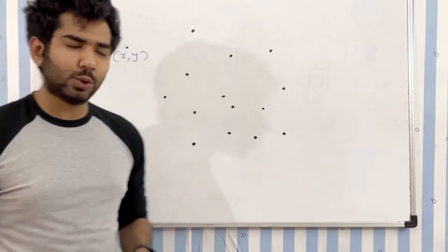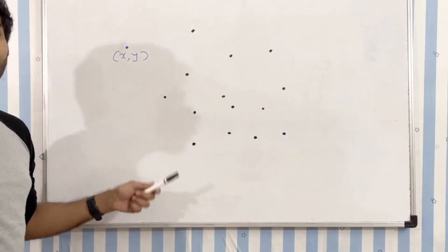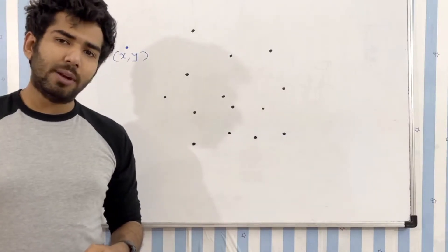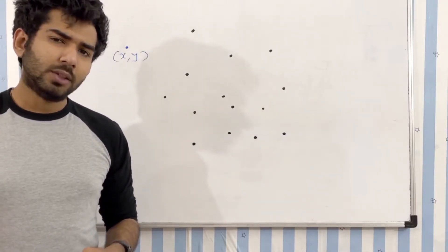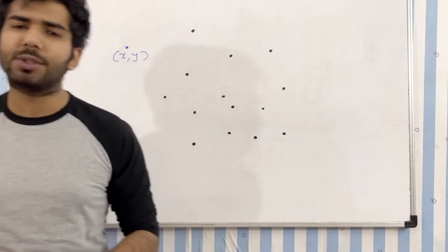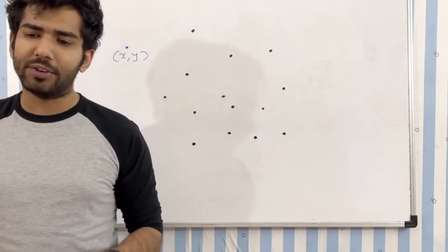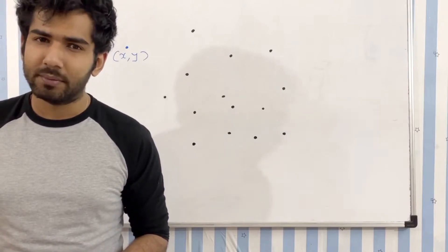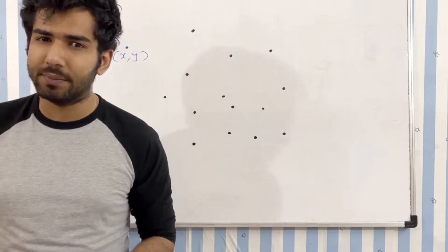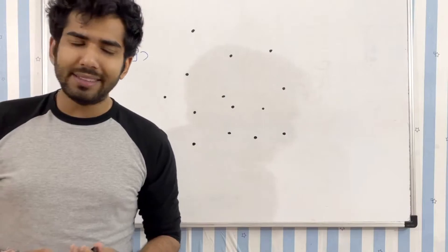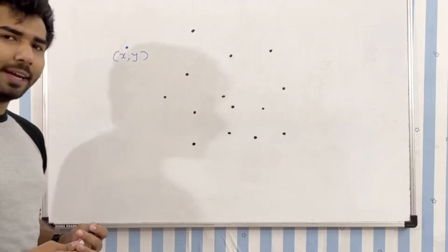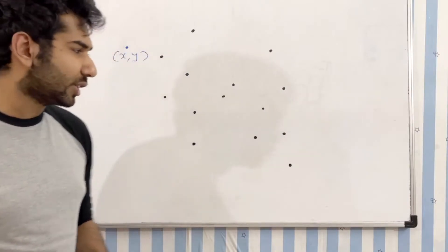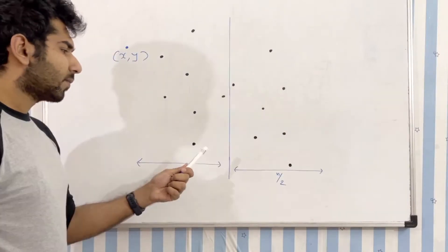The first thought that should come to your mind is to find the distance from each point to every other point. The two points which give the lowest distance will be the output. The time complexity for this approach is O(n²), as we are trying to find the distance from each point to every other point — that means too much computation. Let's see how we can reduce it to O(n log n).